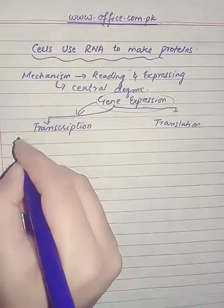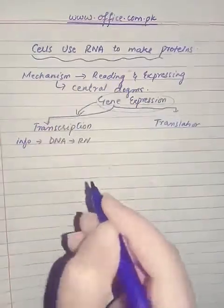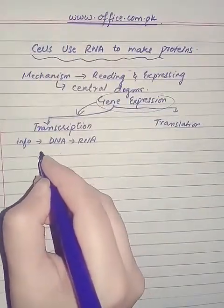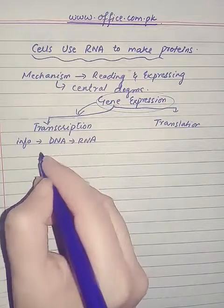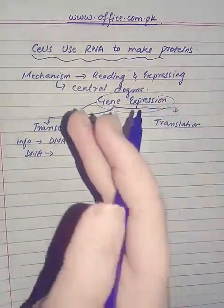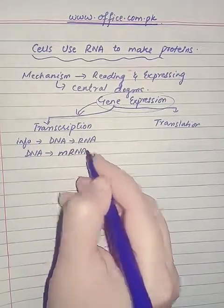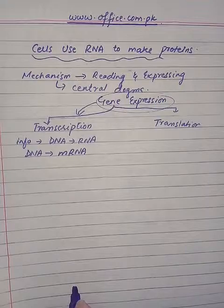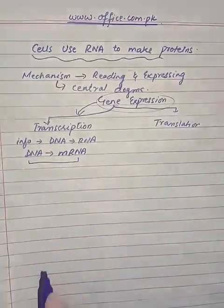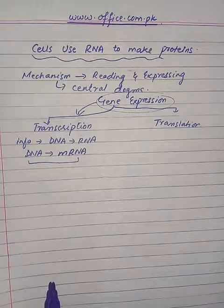Information is transferred from DNA to RNA, and it includes the formation of a messenger RNA copy of the gene. That particular sequence of DNA is copied in the form of messenger RNA, or mRNA. This whole process is known as transcription — the formation of a messenger RNA copy of the DNA.